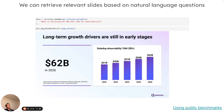We can do a sanity check — take the slide deck, embed it, and see if retrieval even works. I asked: what's the projected TAM over time for observability? Using the retriever built in the notebook, I can retrieve the slide image relevant to that question. I can ask a natural language question and get back an image — then pass that image to GPT-4V, which answers the question very precisely by looking at details in the image. That's the general flow.